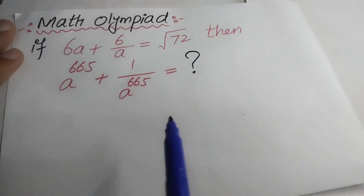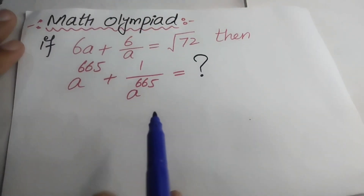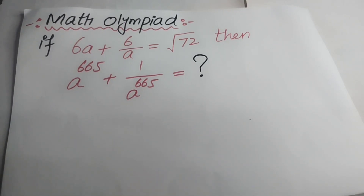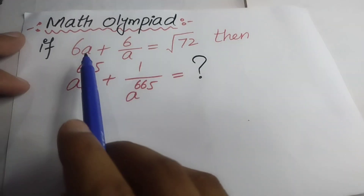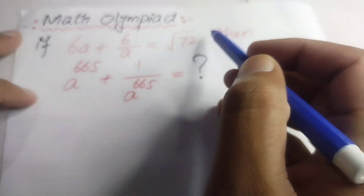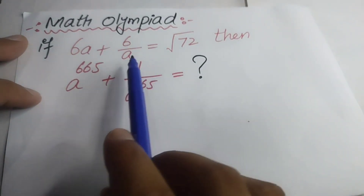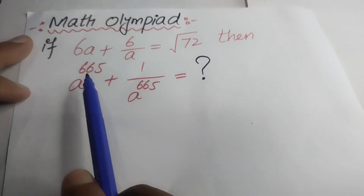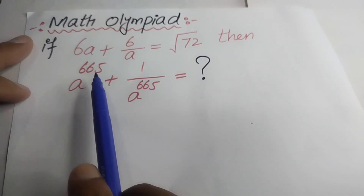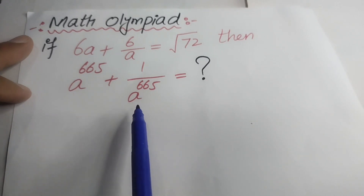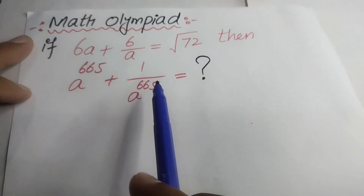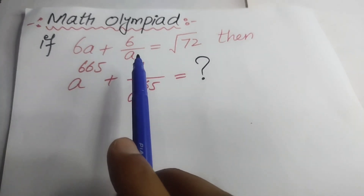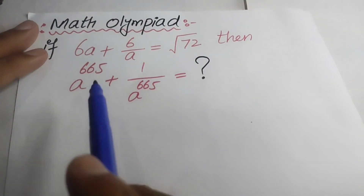Hello everyone, welcome to the Map of Mathematics. In today's lecture we are going to discuss an interesting mathematics olympiad problem. Here we see that this is our given expression, and we can find the solution of this expression: a^665 + 1/a^665. We can find the value of this expression by using this given expression.